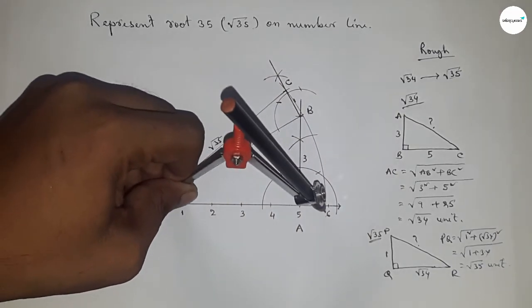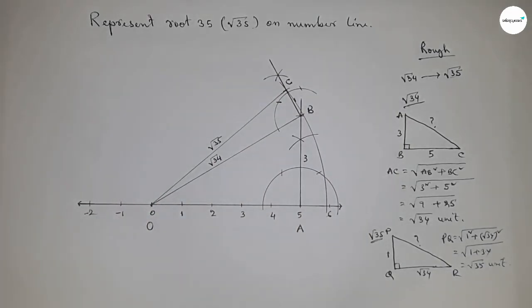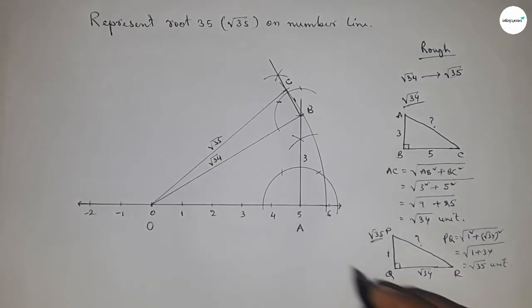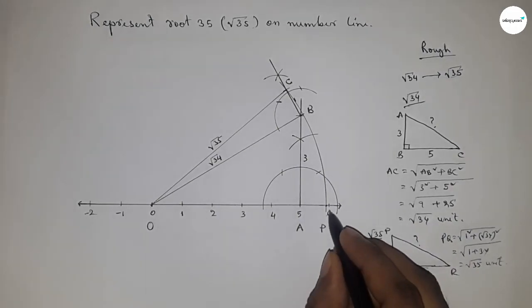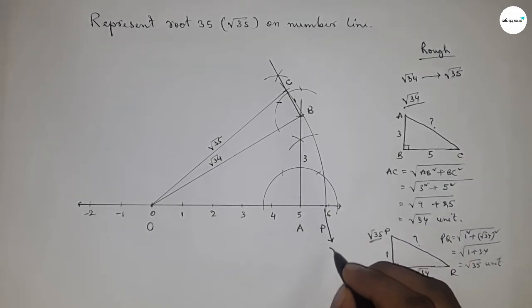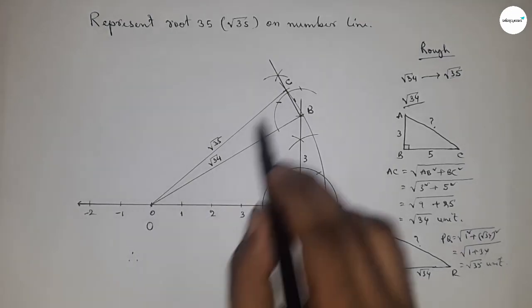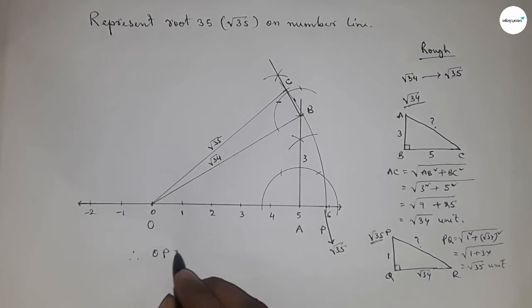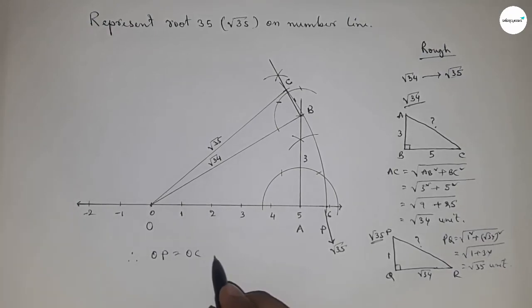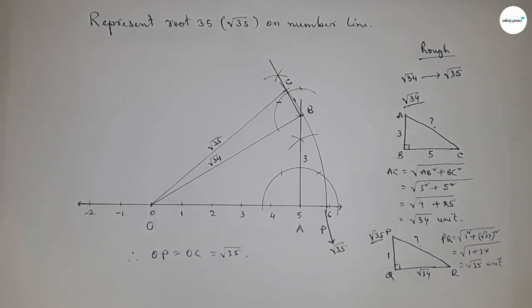From this we can say that OC equals root 35 units. Now taking the length OC by compass and drawing an arc which meets the number line at point P. This is the representation of root 35 on the number line. Therefore, distance OC and OP are equal, both equal to root 35. That's all — thanks for watching, please subscribe, like and comment on my video.